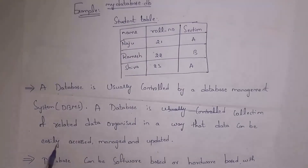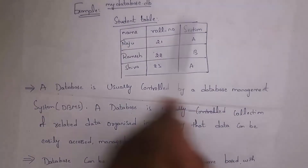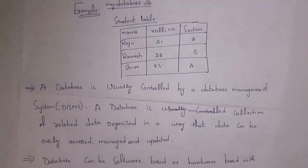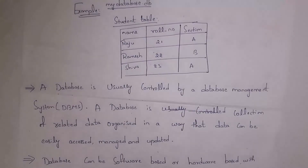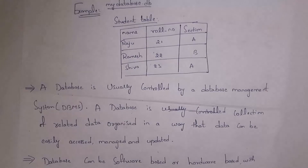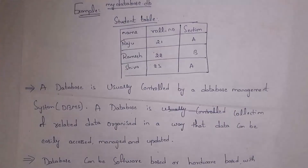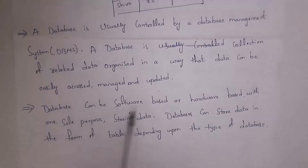In a database we store related data. For example, in a student table we store only student information like student name, roll number, and section. Similarly in an employee table we store only employee information. Data is stored in table format, so it is very easy to access, manage, and update data.